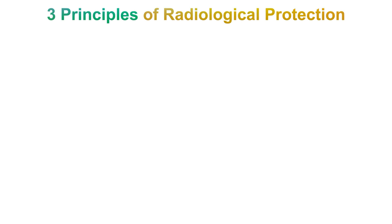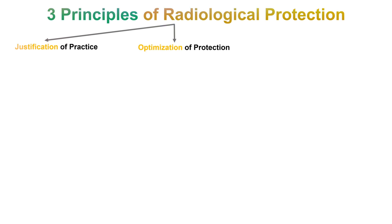So what are the three principles of radiological protection? What are some examples of the same? And what is the ultimate value and benefit of these principles if practiced? The three principles of radiological or radiation protection are namely: justification, optimization, and dose limits — that is, justification of practice, optimization of protection, and application of dose limits.